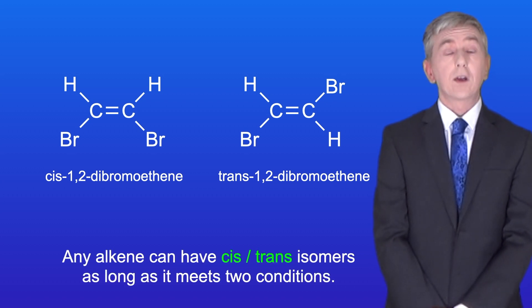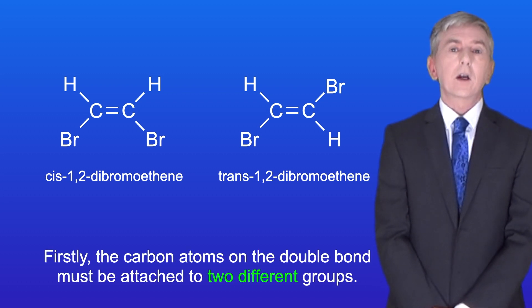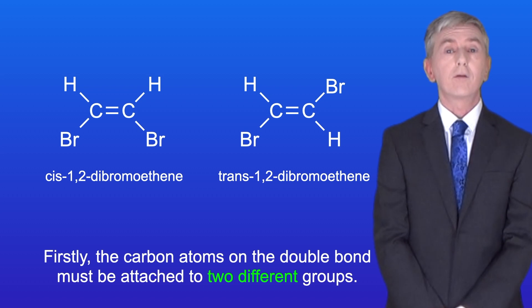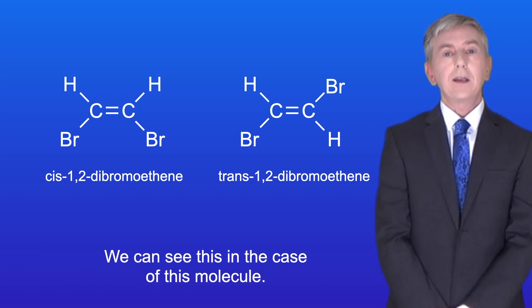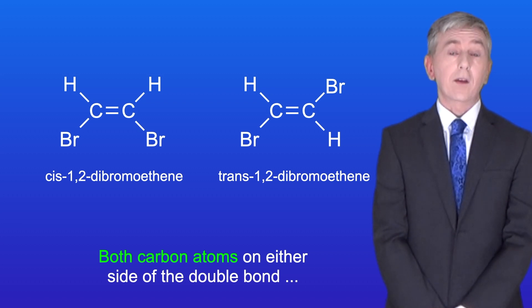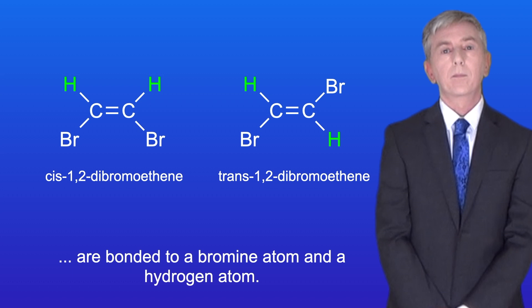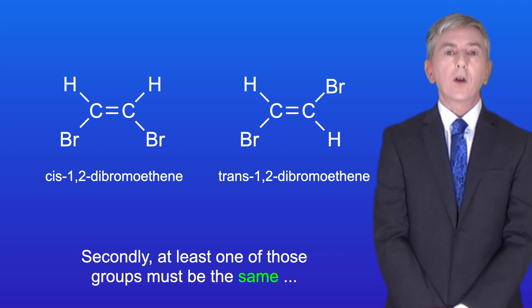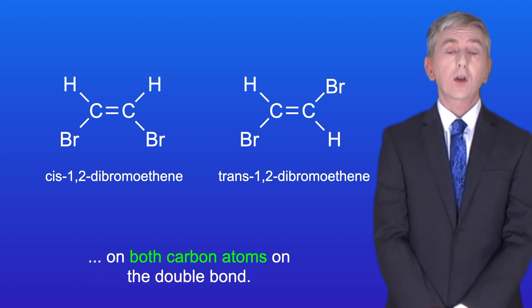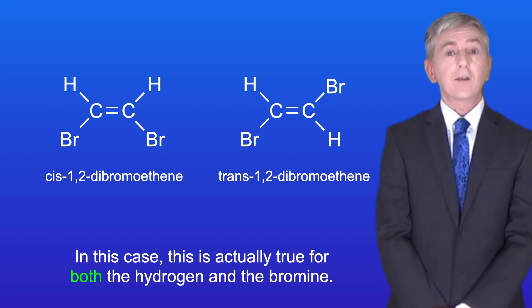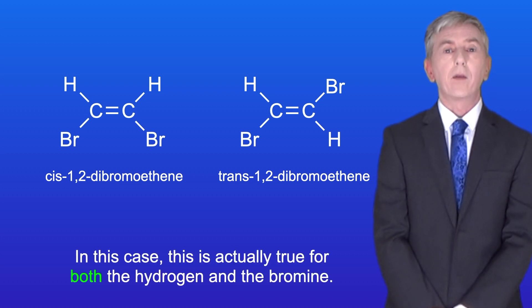Any alkene can have cis-trans isomers as long as it meets two conditions. Firstly, the carbon atoms on the double bond must be attached to two different groups — we can see this in the case of this molecule, where both carbon atoms on either side of the double bond are bonded to a bromine atom and a hydrogen atom. Secondly, at least one of those groups must be the same on both carbon atoms on the double bond, and in this case this is true for both the hydrogen and the bromine.